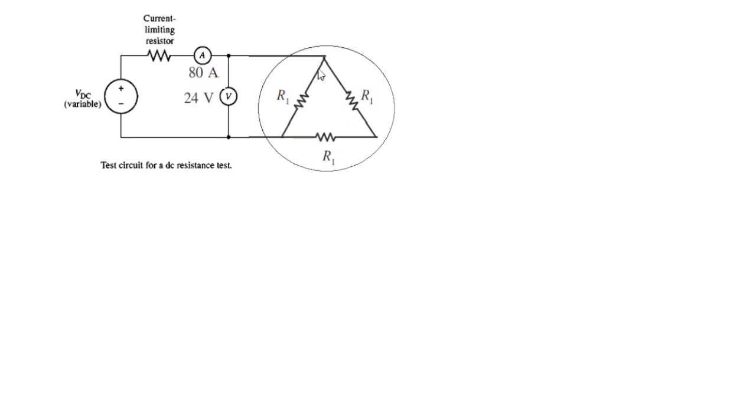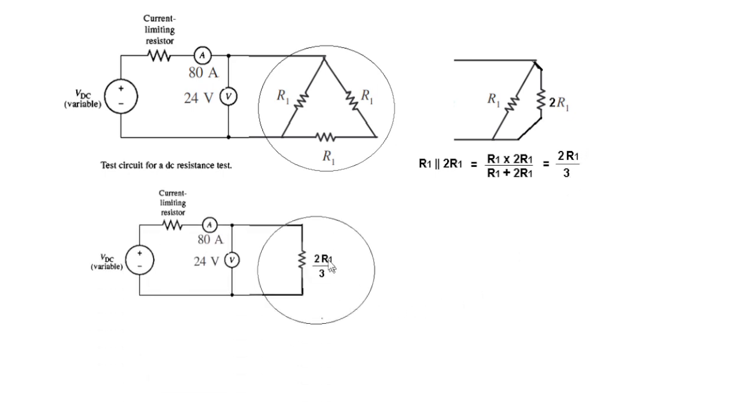For the delta connection test circuit, the resistances are in series and parallel configuration. The equivalent resistance becomes 2R1 over 3. Using the voltage and current values: 24V divided by 80A equals 2R1 over 3. Cross-multiplying to solve for R1: R1 equals 72 over 160.